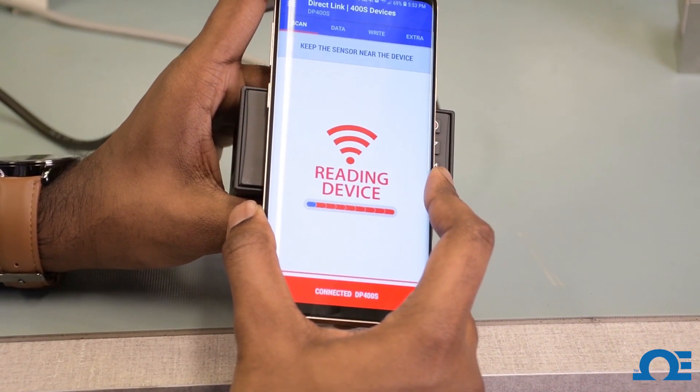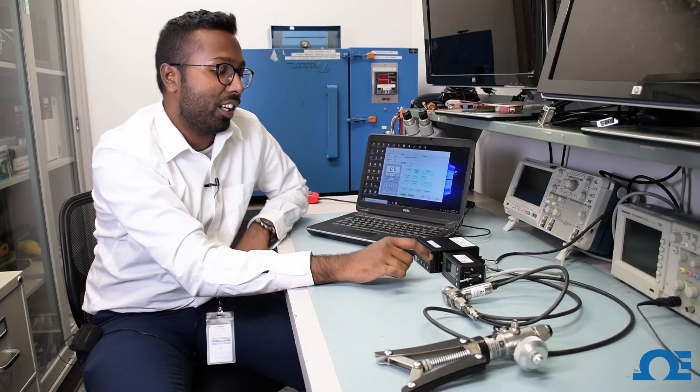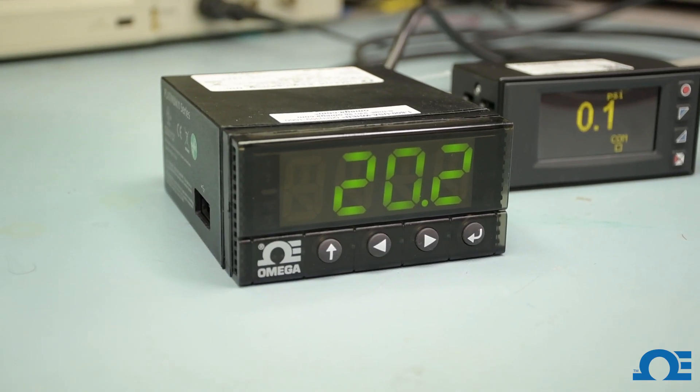You can program it wirelessly using your cell phone and take the signal and feed it to a platinum meter, which is another fast response meter.